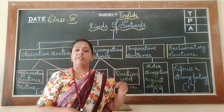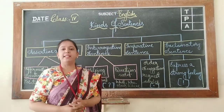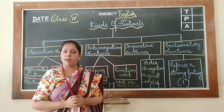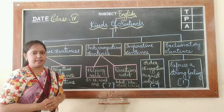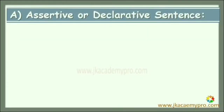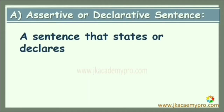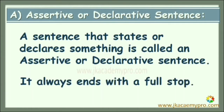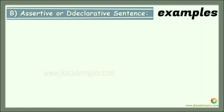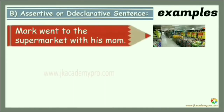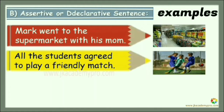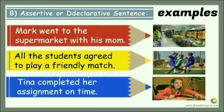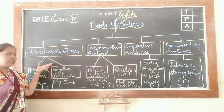Let us learn kinds of sentences one by one. First one: assertive or declarative sentence. A sentence that states or declares something is called an assertive or declarative sentence. It always ends with a full stop. Examples: Mark went to the supermarket with his mom. All the students agreed to play a friendly match. Tina completed her assignment on time.